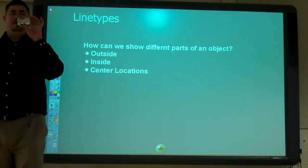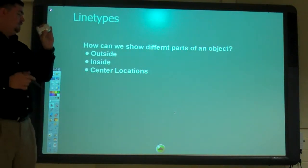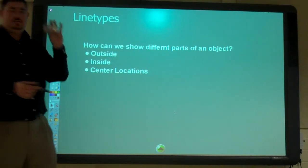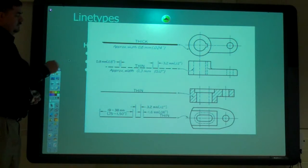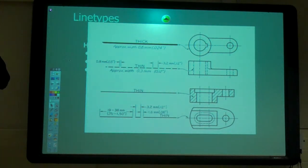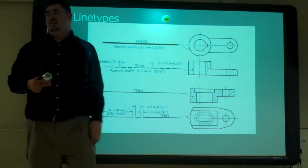Just a little bit, but just so we can see the differences. That's called the alphabet of lines. In this class we're going to use four basic ones. We have our object lines, which is the outside, which are our thick lines.